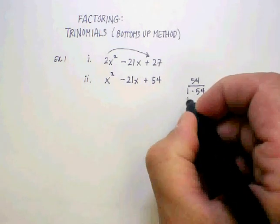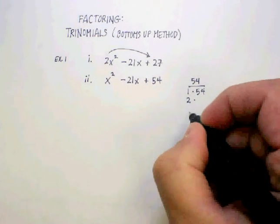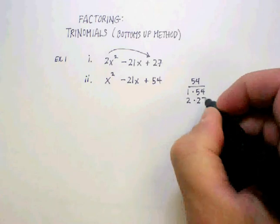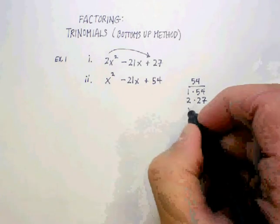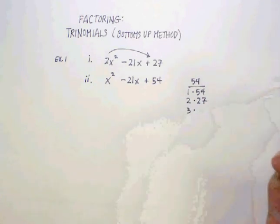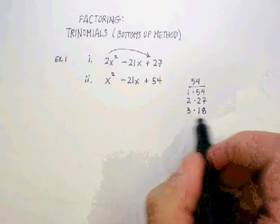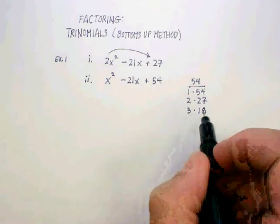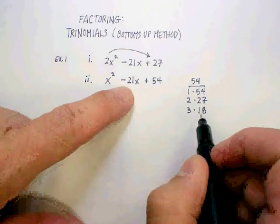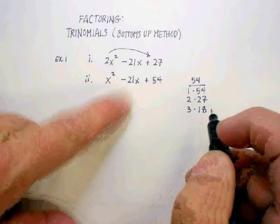I start with 1, so 1 times 54, and then I go 2 times 27, 3 times 18. Aha, there it is, because you'll notice that 3 and 18 can add up to negative 21.